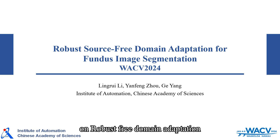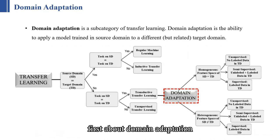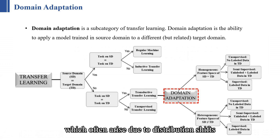I'd like to present our work on Robust Source-Free Domain Adaptation for Fundus Image Segmentation to WACV 2024. First, about domain adaptation: it is a transfer learning method that aims to bridge the gap between source and target domains, which often arise due to distribution shifts.